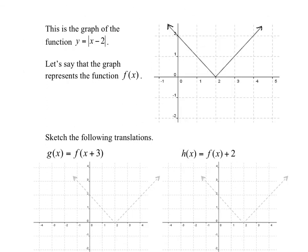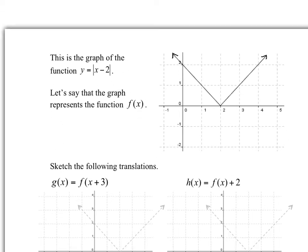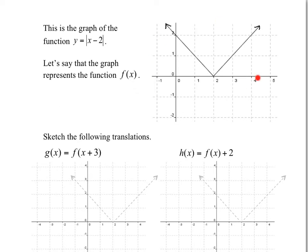In this example, we're starting with an original graph — this is the graph of y equals absolute value of x minus 2. The absolute value makes everything positive. So normally you have the line y equals x minus 2, and then the absolute value makes all the negative values positive, which is why you end up with this V-shape graph. We're going to call this graph f of x, our parent function, and we're going to make transformations on it.